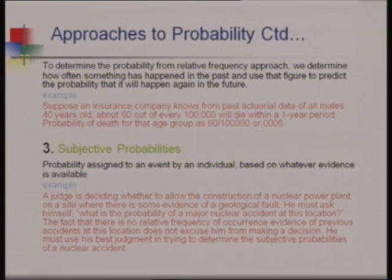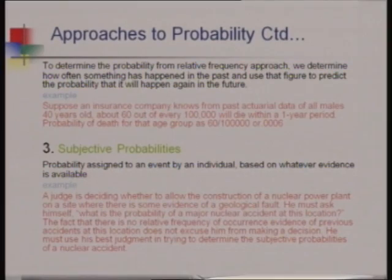To summarize, there are three approaches: first, the prior classical approach — when we know outcomes in advance and use the formula of favorable cases divided by total possible outcomes. Second, the relative frequency approach — where we conduct an experiment and count favorable occurrences out of total trials. Third, the subjective approach — when we have no chance to experiment and do not know outcomes in advance, so judgment determines the probability.